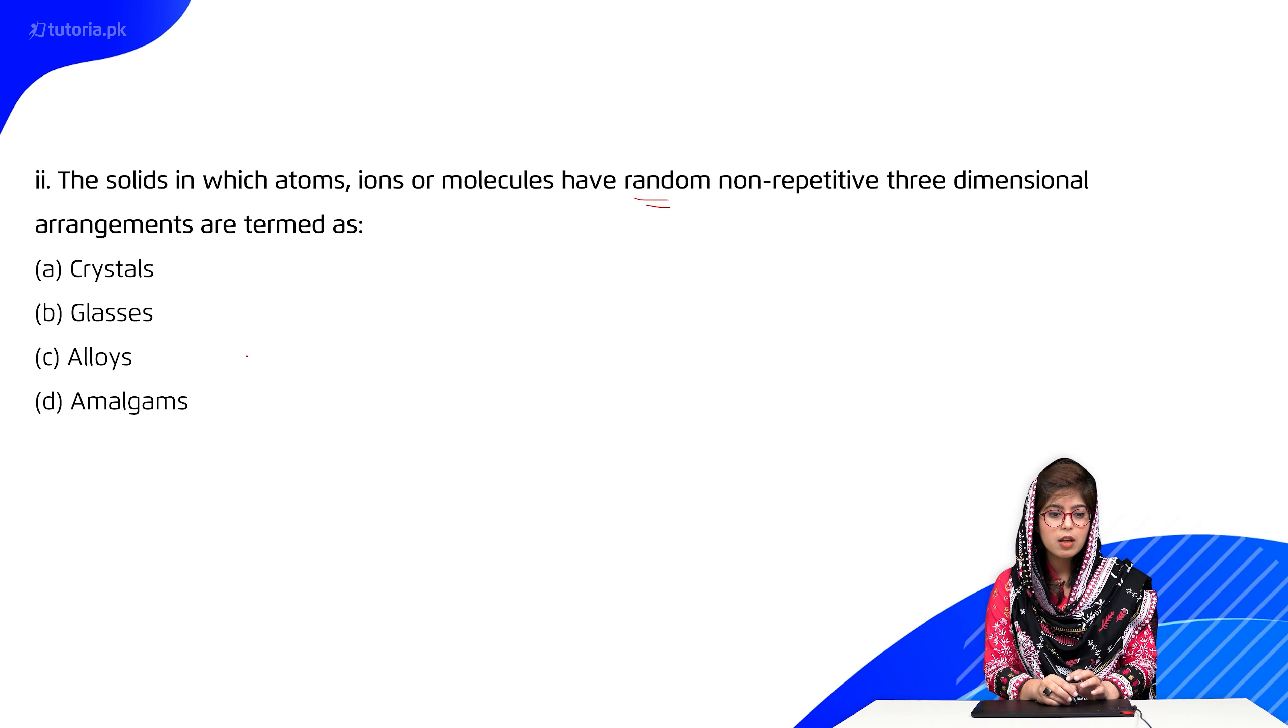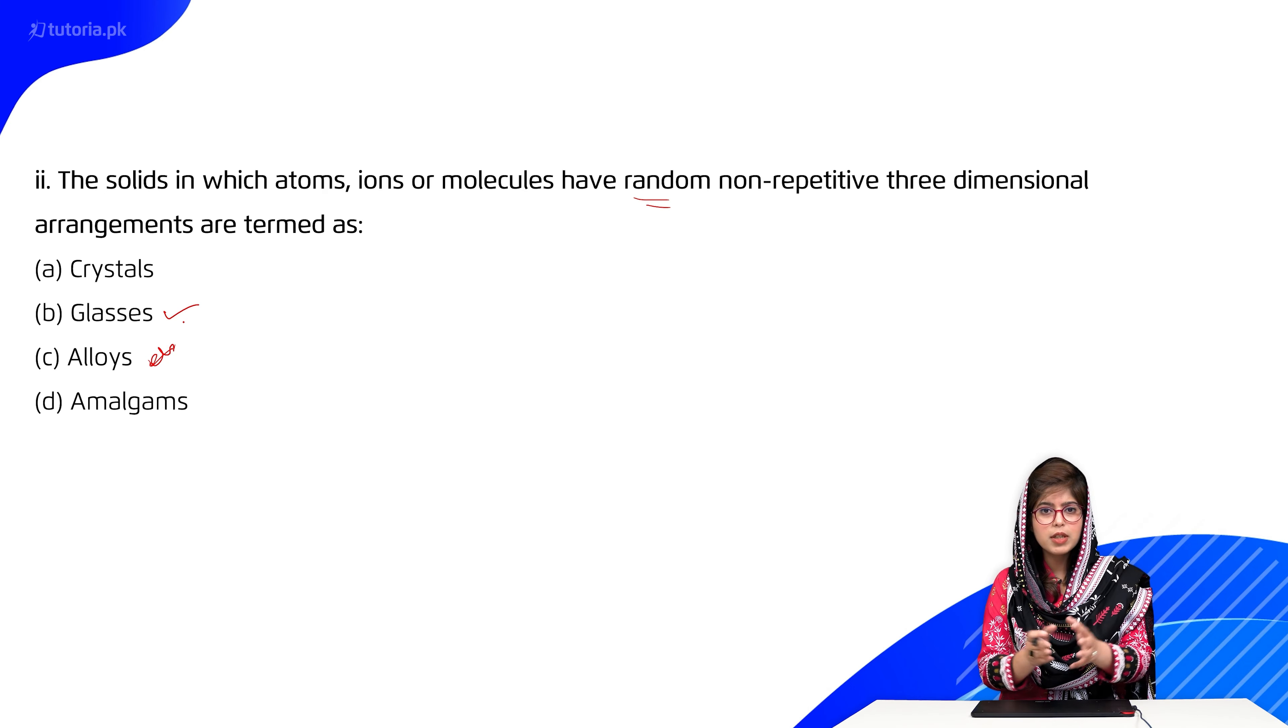It means it's glasses. Crystals mein random nahin hoti, definite hoti hai, repetitive three dimensional arrangement. Jabke alloys, metals ki form hai jis mein two metals ko aap mix kerte hain aapas mein. Uske alawa, amalgams bhi tarah ka mixture hai.